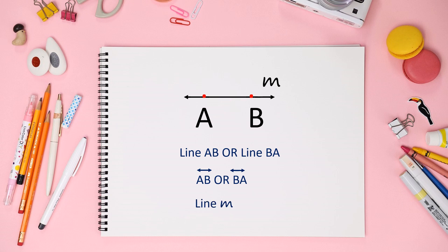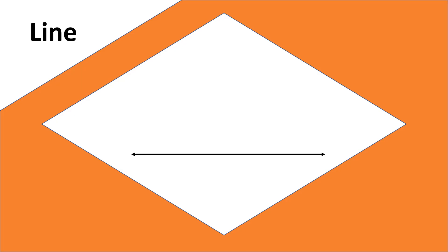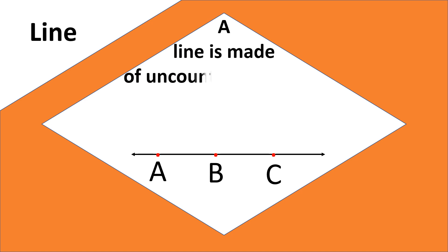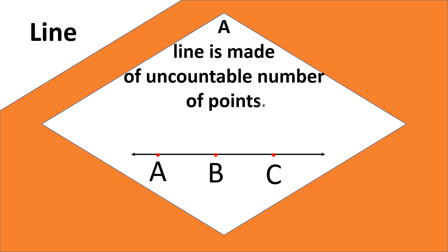Here is a line with points A, B, and C on it. In a similar way we can put as many points as we want on this line, which means a line is made of an uncountable number of points.